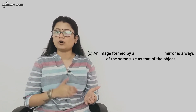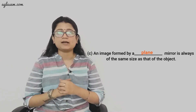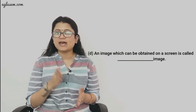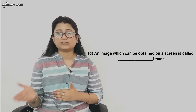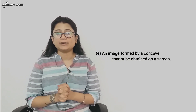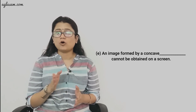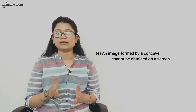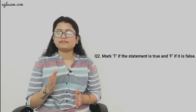Part (c): An image formed by a plane mirror is always of the same size as that of the object — the answer is 'plane'. Part (d): An image which can be obtained on a screen is called a real image. Part (e): An image formed by a concave lens cannot be obtained on a screen — the answer is 'lens'.